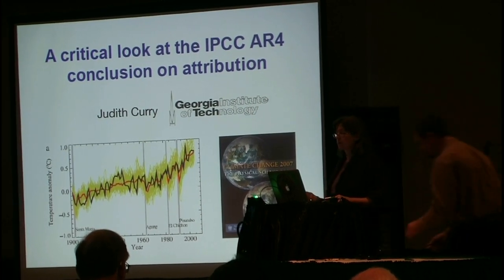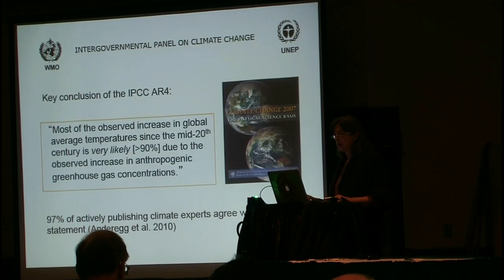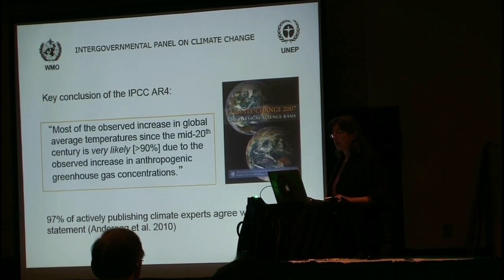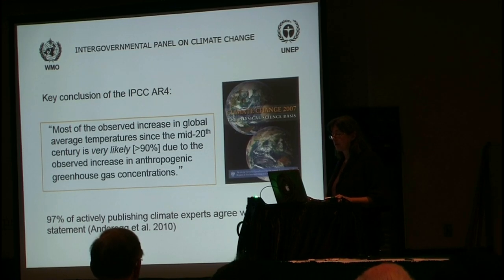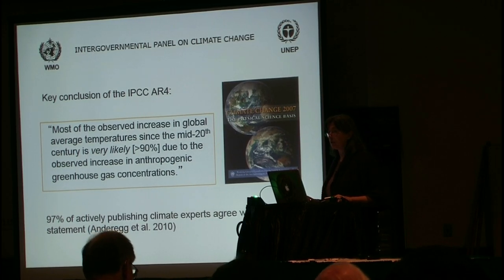The title of my talk is a critical look at the IPCC AR4 conclusion on attribution. I'm sure you've all seen this statement from the AR4: 'Most of the observed increase in global average temperatures since the mid-20th century is very likely due to observed increase in anthropogenic greenhouse gas concentrations.' One survey of actively publishing climate experts concluded that 97% agree with this statement. I suspect that agreement with this statement might be smaller in this room — that would be an interesting topic for discussion.